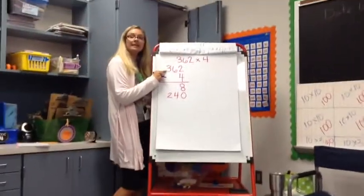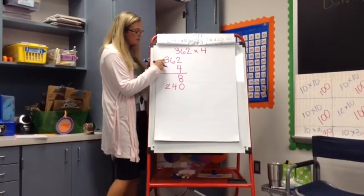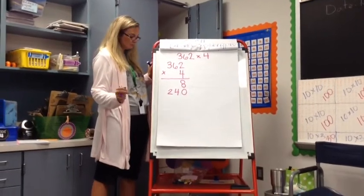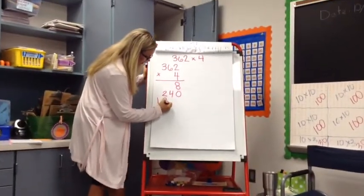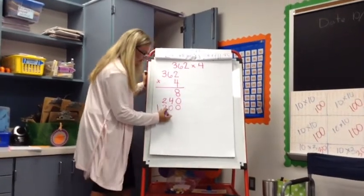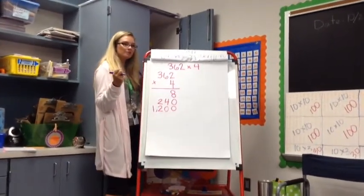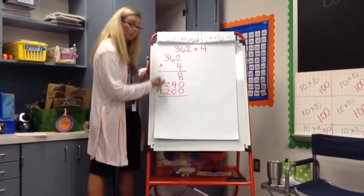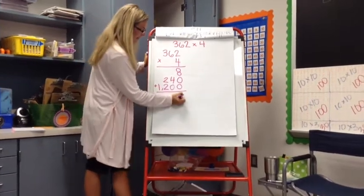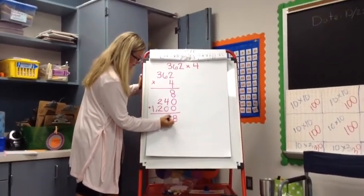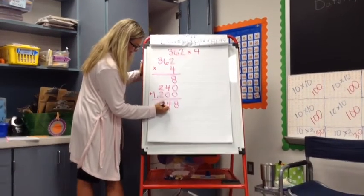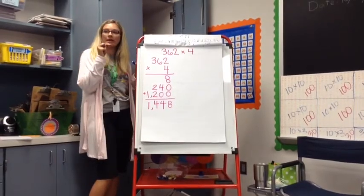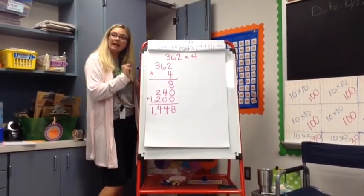Finally, what is the three? It's three hundred. Three hundred times four is one thousand two hundred, because four times three is twelve and then I just add the two zeros from the three hundred. All I need to do is add these partial products together to get my final answer, and I see the answer is one thousand four hundred forty-eight.